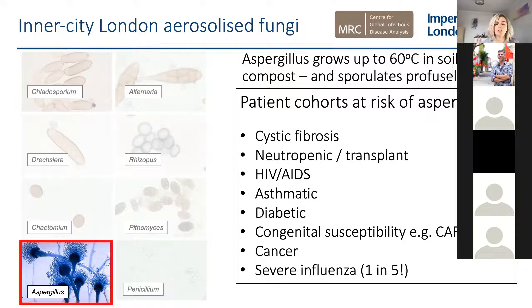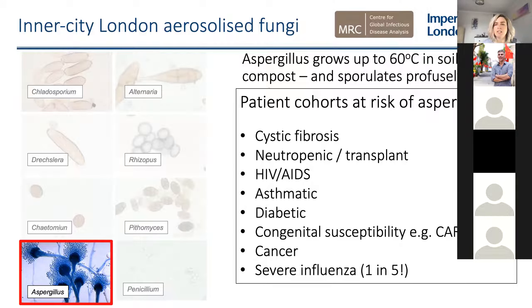The main patient cohort for us is cystic fibrosis. The UK has the second largest cohort of CF patients in the world — the first being the US — and Imperial NHS appears to have the largest cohort in London due to our focus on respiratory medicine. We also see neutropenic transplant patients, asthmatics, very rarely HIV/AIDS and cancer. Recently we're starting to see influenza-associated aspergillosis, and over the past 12 months, COVID-associated pulmonary aspergillosis, with reports from mainland Europe of high mortality rates for CAPA.